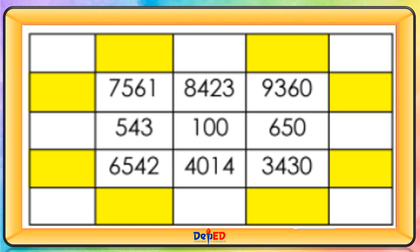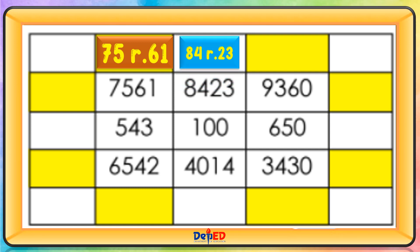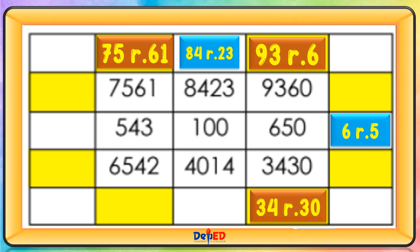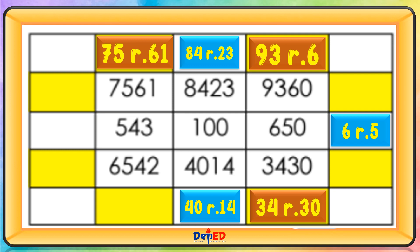7,561 divided by 100 equals 75, remainder 6. 8,423 divided by 100 equals 84, remainder 23. 9,360 divided by 100 equals 93, remainder 6. 6,650 divided by 100 equals 6, remainder 5. 3,430 divided by 100 equals 34, remainder 30. 4,014 divided by 100 equals 40, remainder 14. 6,542 divided by 100 equals 65, remainder 42.